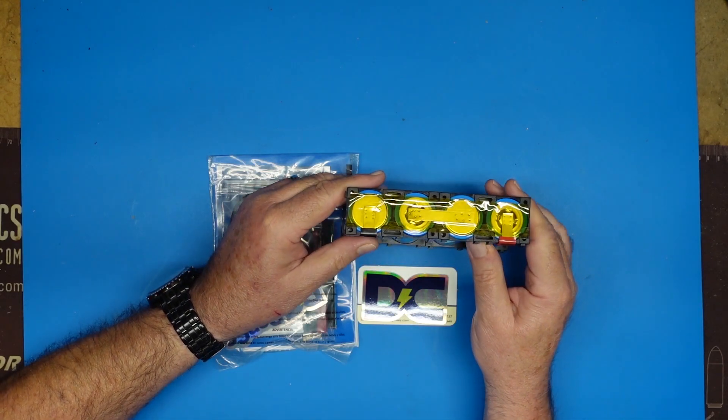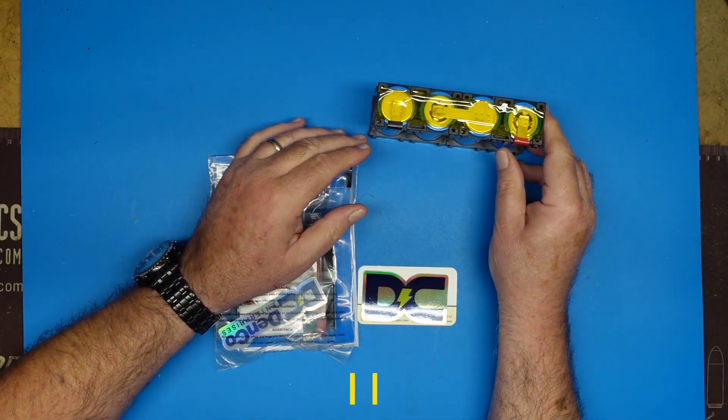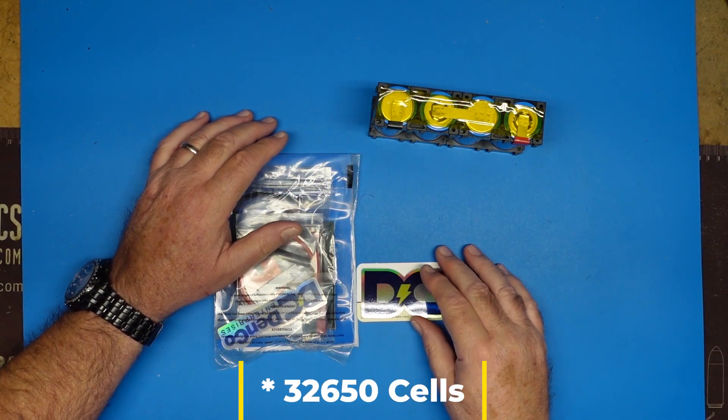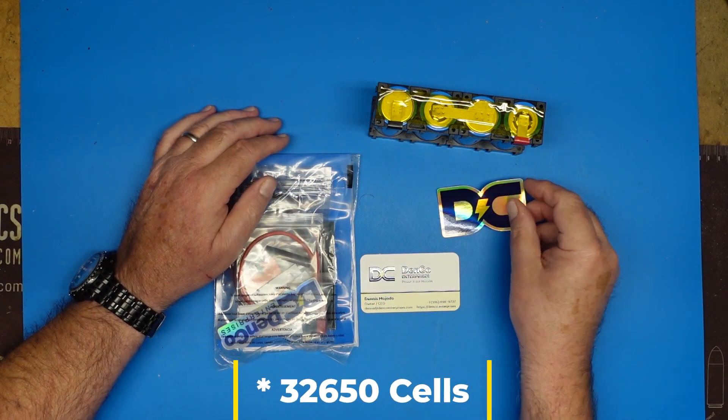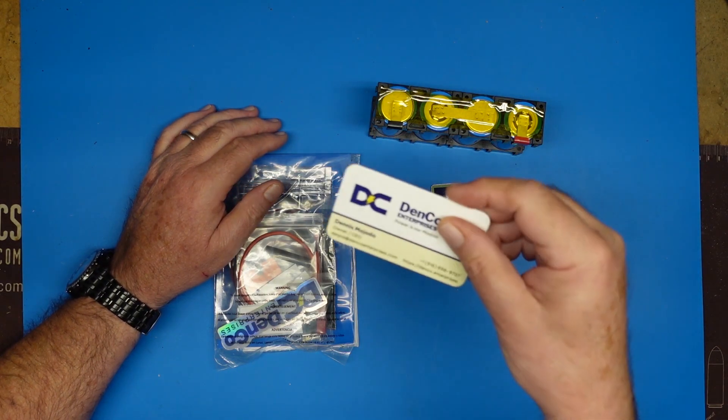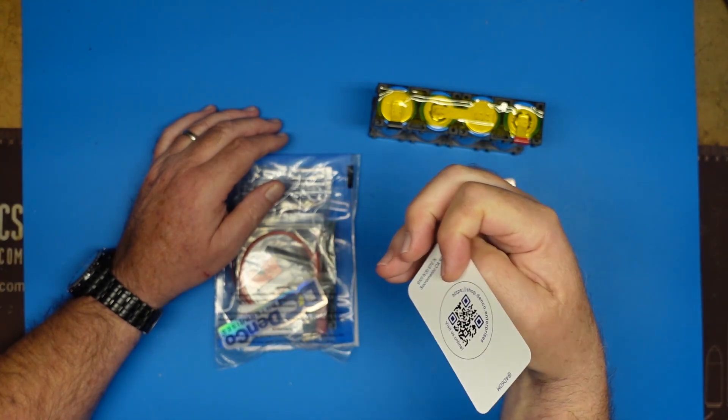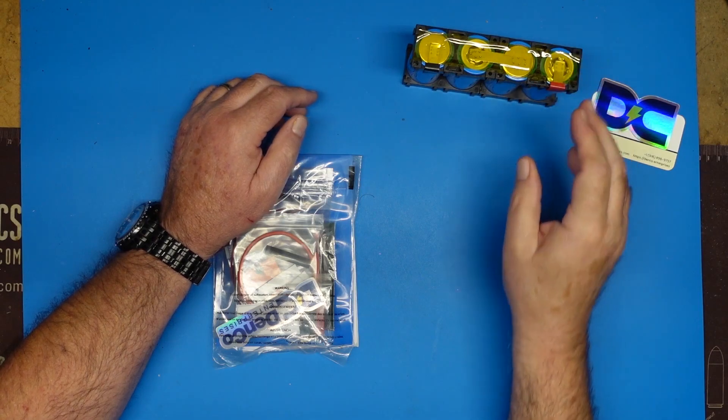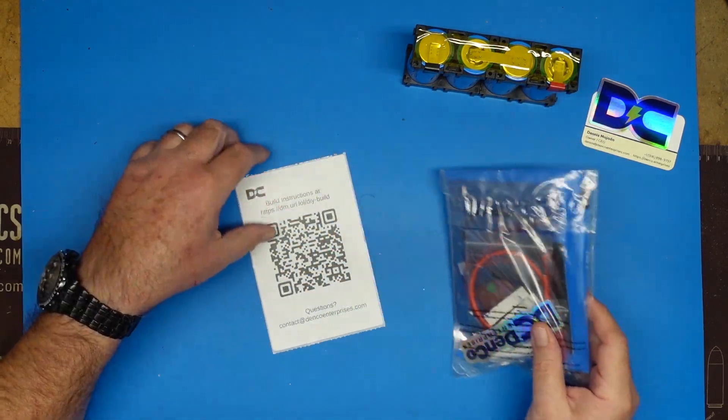And he's marked the pack positive and the pack negative leads, so we can appropriately identify them. These are 32,760-type cells. I believe I gave you the right number. And of course, this comes with a couple of stickers. There's one there, a card for Dennis and Denco. And Dennis is a great guy. I've met Dennis, and know him personally, and really like him. Solid guy, very smart, smarter than me.